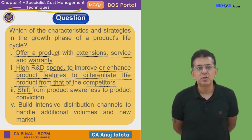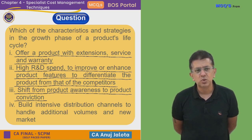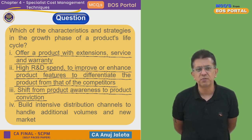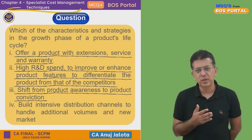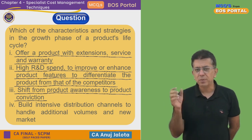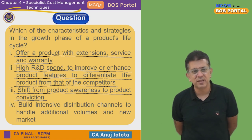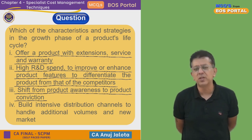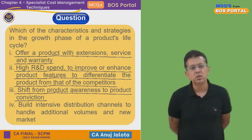Third option: shift from product awareness to product conviction. I think yes — awareness we would like to be doing in the introduction stage mainly. Now people already know about our product, so we have to tell them this is the best product out there. The introduction stage is over, so we shift to conviction.